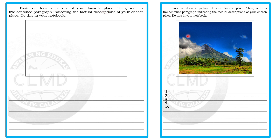For the last activity, paste or draw a picture of your favorite place. For example, my favorite place is Mount Mayon since I came from the Bicol region. Then write a five-sentence paragraph with factual descriptions of your chosen place. Do this in your English notebook. If you don't have a printer, you may draw and color the picture properly. Always study hard and do your work.